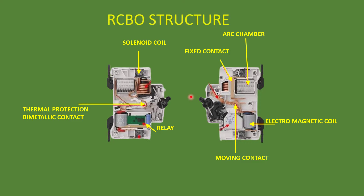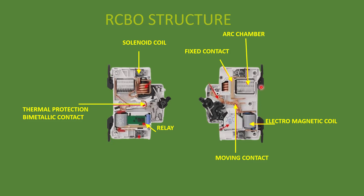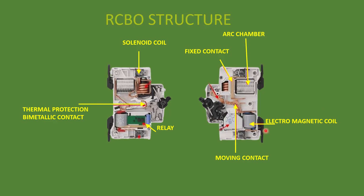In an RCBO, the left side contains the elements of an MCB: a solenoid coil with a spring for short circuit protection, and a bimetallic strip for thermal overload protection. On the right side you can see the arc chamber for extinguishing arcs from sudden disconnection, fixed and moving contacts, and the electromagnetic coil system — primary, secondary, and sensing coils from the RCCB section. In some countries RCBO is used as the incomer for final distribution boards.